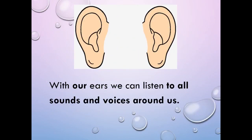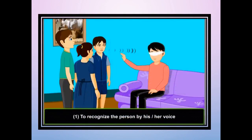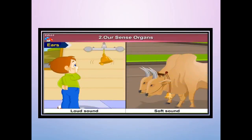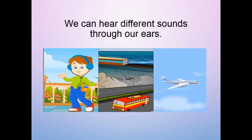Let's come to the second sense, which is the sense of hearing. With our ears we can listen to all sounds and voices around us. In this picture, a person is having a blindfold on his eyes but still he can recognize the other person with the help of voice. We can also differentiate loud and soft voices, and hear different sounds through our ears.